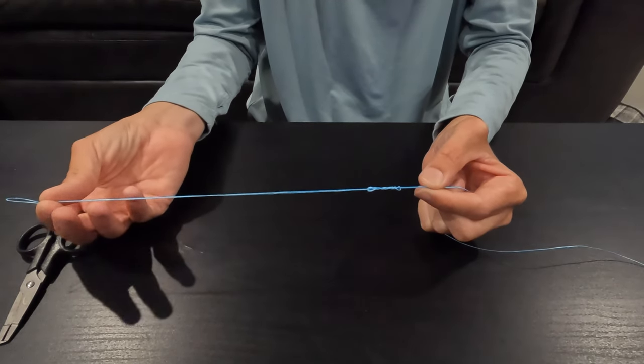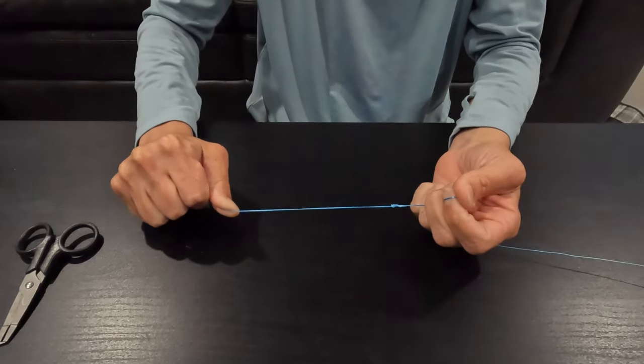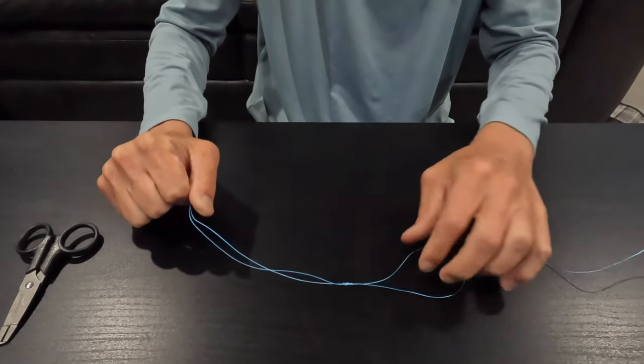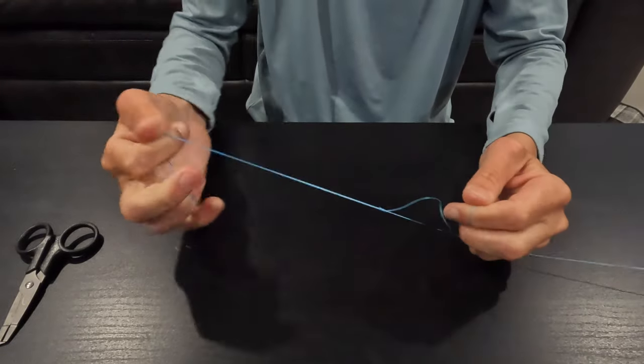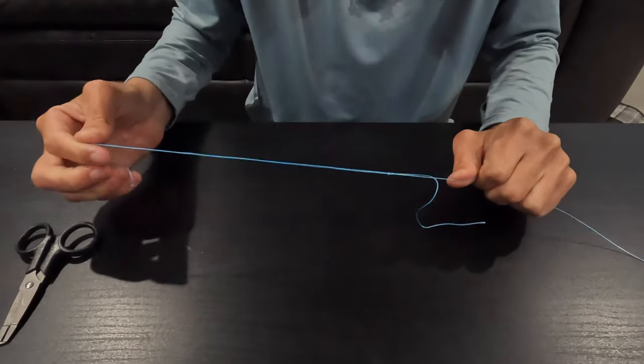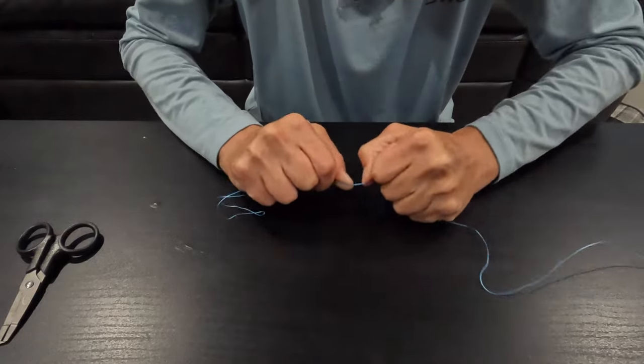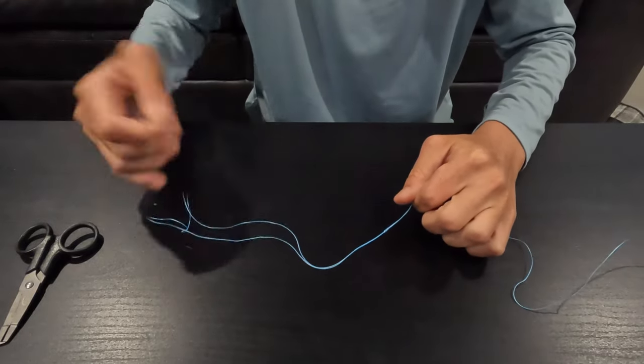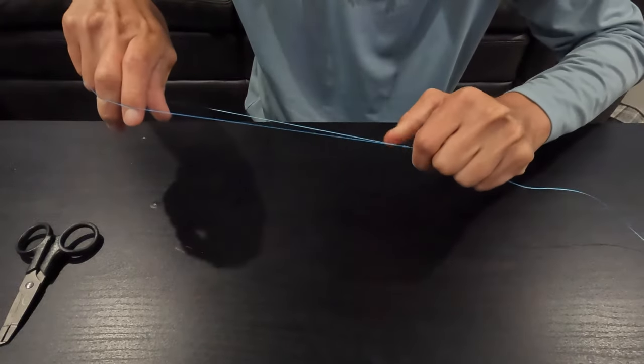That was actually five wraps that I did, but it doesn't matter. And we're just going to start to pull this kind of tight and eventually it will look something like, let's see, pull tight. You really got to pull evenly on all four corners and it's not a really pretty knot, but it is a super strong knot.